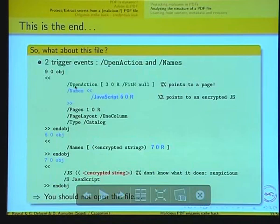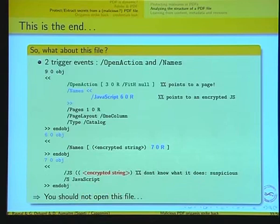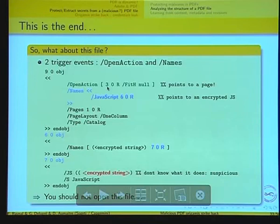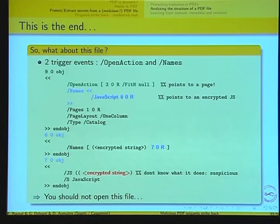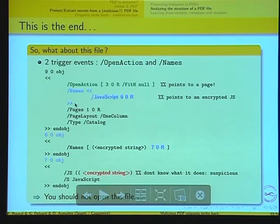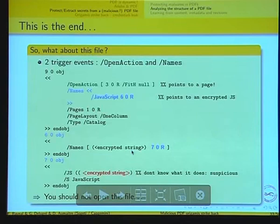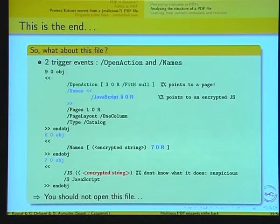Going back to this file, the difference now is that there is only one JavaScript, not two. It's time to get into the PDF itself. In green you see the open action — this trick was used about a year ago to trigger malicious JavaScript. In this analyzed file, the open action points to object number three, which is a page — that's not supposed to happen, so the open action does absolutely nothing. The creator probably forgot to erase it. The real new trick is the name entry, which leads to object six containing JavaScript. Object six is names, pointing to object seven — the actual malicious JavaScript stream, which is encrypted. So you know something bad is in this file and you should definitely not open it.